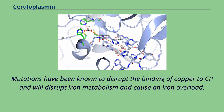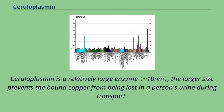Mutations have been known to disrupt the binding of copper to CP, which disrupts iron metabolism and causes iron overload. Ceruloplasmin is a relatively large enzyme, and the larger size prevents the bound copper from being lost in a person's urine during transport.